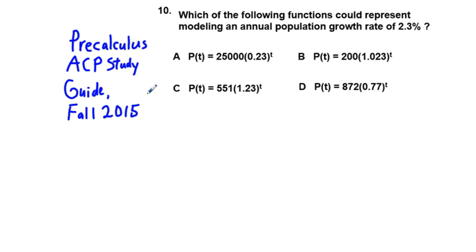This is the Precalculus ACP study guide for Fall 2015. This is problem 10: Which of the following functions could represent modeling an annual population growth rate of 2.3 percent? The formula, the template for growth rate formula is this.